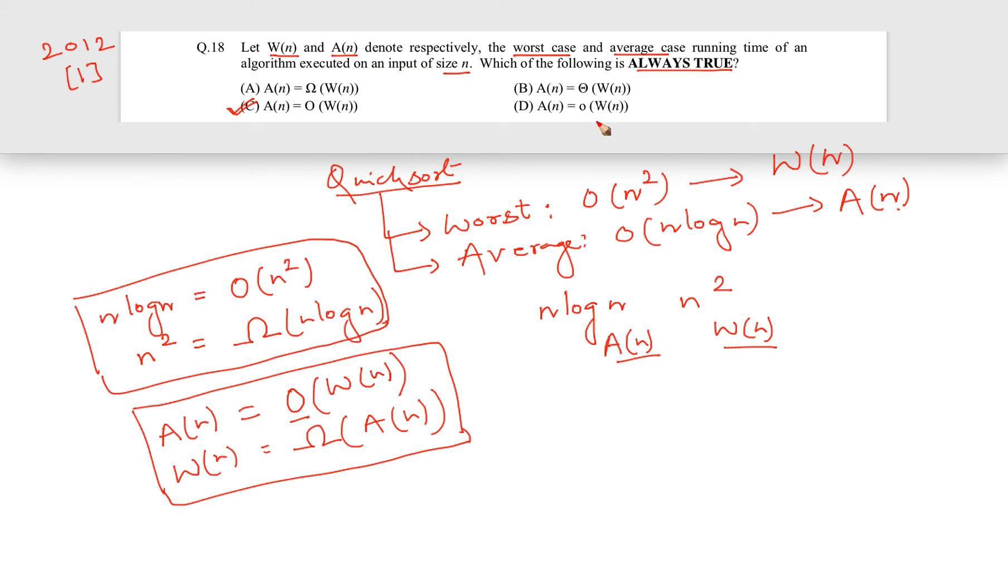Little-o is actually, if a function f(n) and g(n) we are comparing, and if this g(n) is strictly bigger than f(n) asymptotically, then we say that f(n) is equal to little-o of g(n). And if it is less than or equal to, then we say that f(n) is equal to big O of g(n). So this is the definition of little-o.